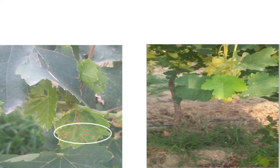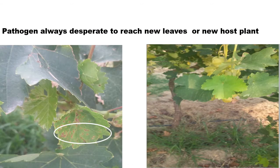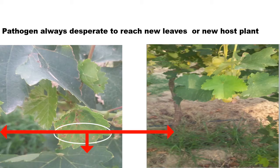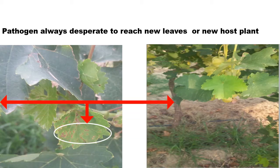If you look at your screens you find two grape plants. The plant on the left side is showing disease symptoms, but the disease is only confined to a single leaf, while the plant on the right side is disease free. So what choices are left for the pathogen? To remain confined to the same leaf, or to attack new healthy leaves of the same plant, or try to reach the leaves of another plant growing a little bit further away.